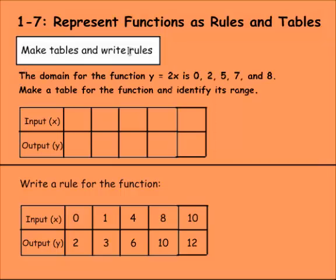Here we have this problem. We need to make tables now and write function rules. The domain for the function y equals two x, that's the rule of the function, is zero, two, five, seven, and eight. So that's the input here. Zero, two, five, seven, and eight.